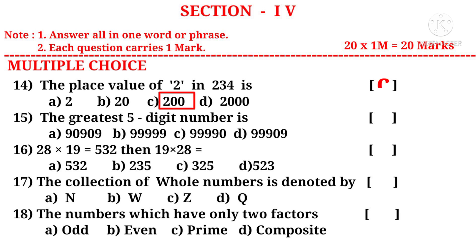The greatest five digit number is. It has only 9s. So 5 9s: 99999. So the correct choice is B. 28 into 19 is 532. Then 19 into 28 is the same number 532. So the correct choice is A.